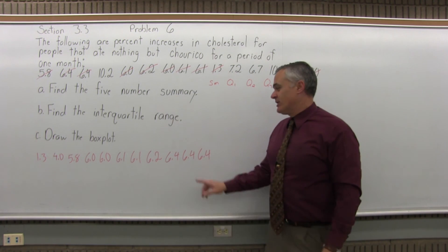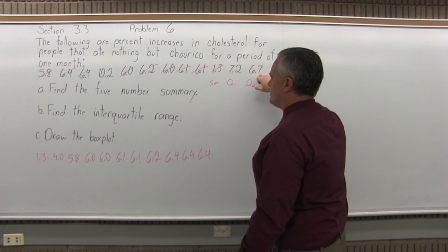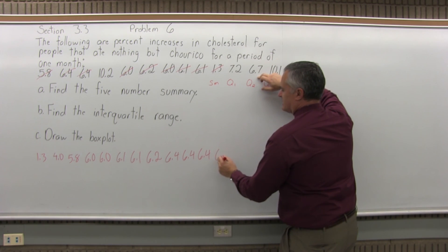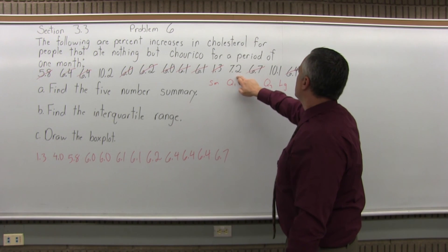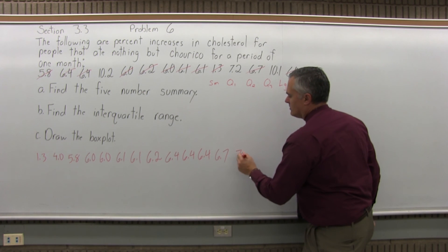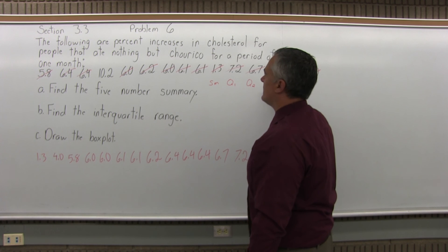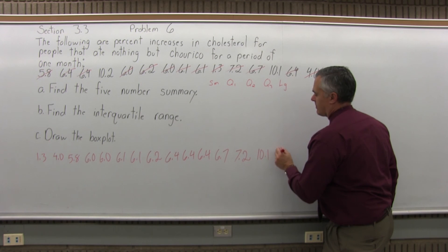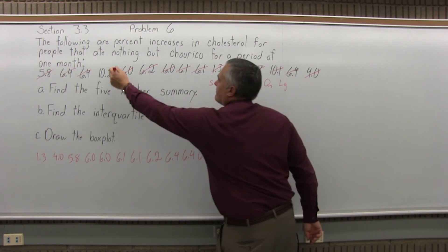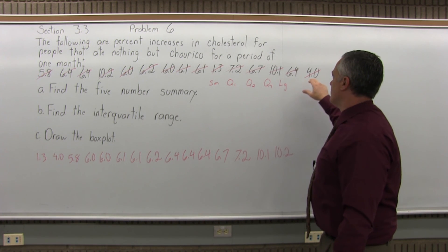Two at 6.1. That seemed to be pretty common. Most people went up somewhere in the sixes. One at 6.2. 6.4 is very common, shows up three times. So if this chapter talked about the mode, that would be the mode. 6.7 looks like it's the last one in the sixes. Then in the sevens, I have a 7.2, and then 10.1 and 10.2. Those people's cholesterol really went up quite a bit.